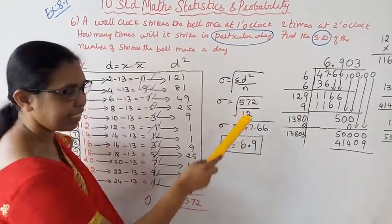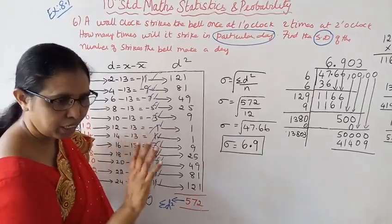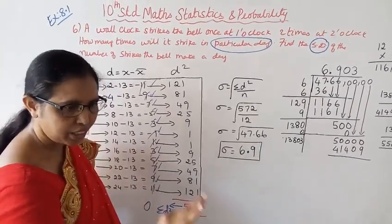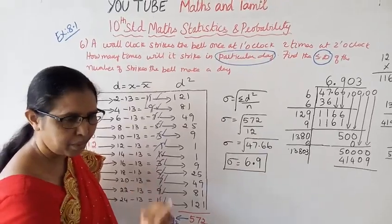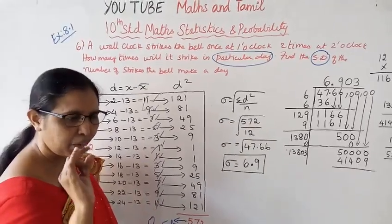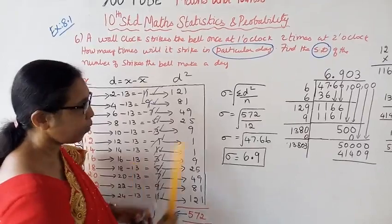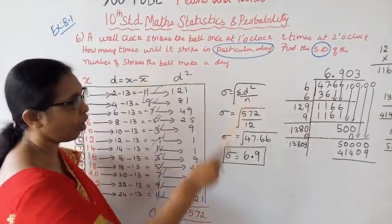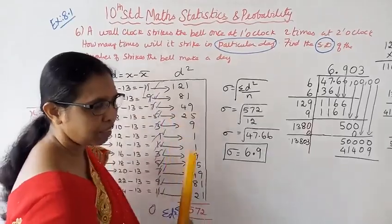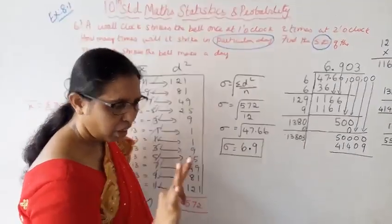To find the square root of 47.66, we will use the long division method. We will calculate using the long division square root method to get the answer to three decimal places.